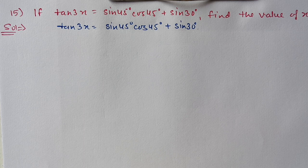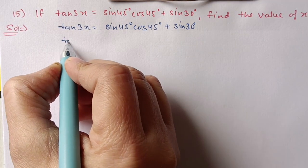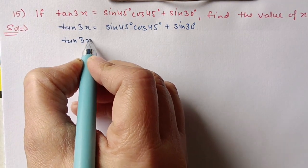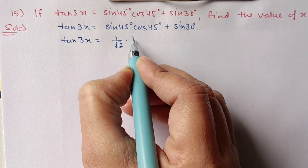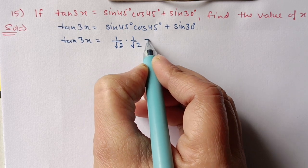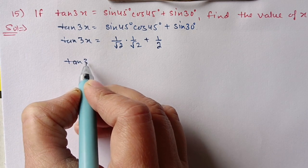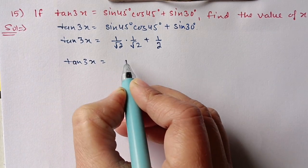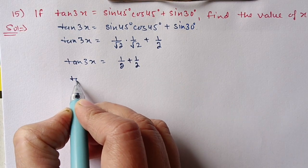Question 15: If tan 3x equals sin 45 times cos 45 plus sin 30, find the value of x. First we substitute values on the right side and then compare with the left side. Sin 45 value is 1 upon root 2, cos 45 value is 1 upon root 2, sin 30 value is 1 by 2. So tan 3x equals, after multiplication, 1 by 2 plus 1 by 2.